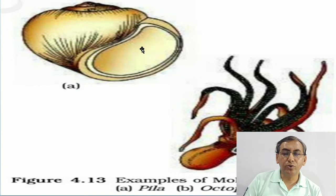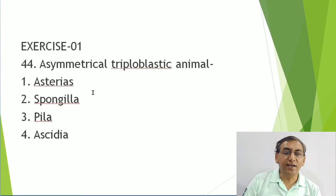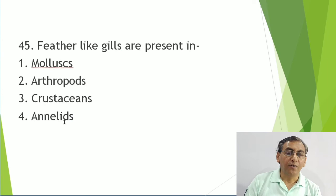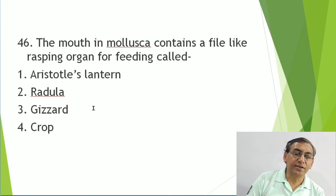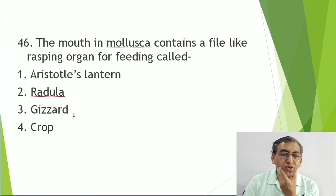Questions on Mollusca: Asymmetrical, triploblastic - that is class Gastropoda, Pila (apple snail) - asymmetrical due to torsion of the shell. Feather-like gills are present in the mantle cavity in Mollusca. The mouth of Mollusca contains a file-like rasping organ called the radula.